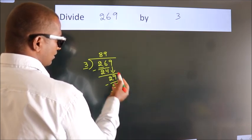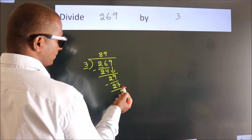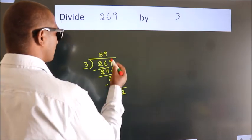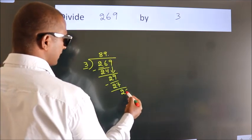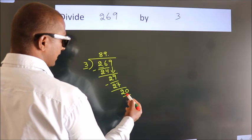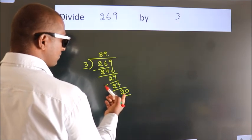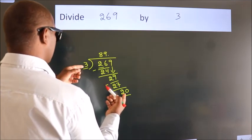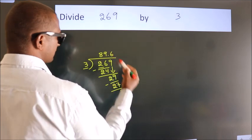After this, no more numbers to bring down. So what we do is, we put a dot and take 0. So 20. A number close to 20 in the 3 table is 3 times 6, which is 18.